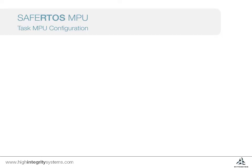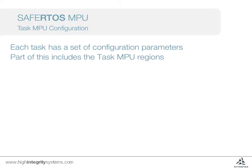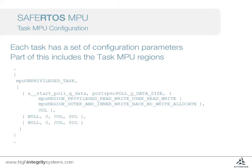If you remember from an earlier video series, when a task is created a set of parameters are required — for example a buffer for the task stack. Where SafeARTOS has MPU support, each task requires a set of parameters for the initial MPU configuration of the user regions. These are arranged as a structure within the task parameter declaration. Firstly, the privileged mode for the task is set. If this mode is set as privileged, then the rest of the structure does not affect the functional behavior, but it still needs to be populated.